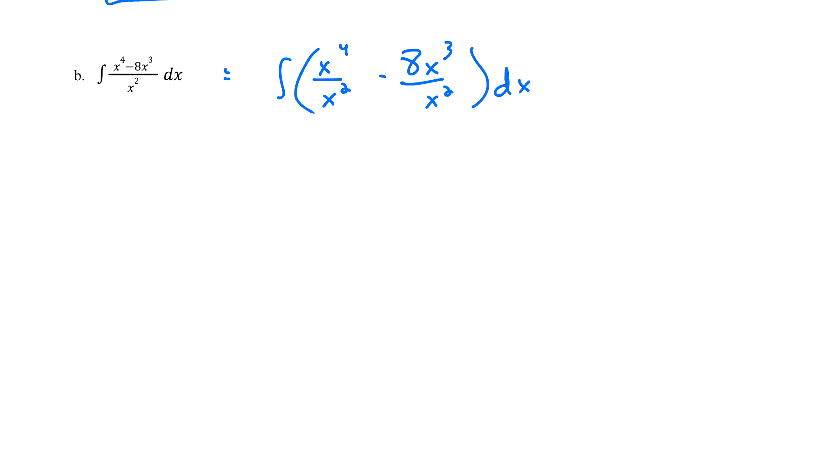I'm still integrating. I haven't done my power rule, so that means I still have my integral, I still have my differential dx. And then at this point, let's go ahead and simplify this. We can cancel some powers of x here. Again, I'm not integrating, so my integral symbol is going to come down to the next step. I should have x² for my first term minus 8x for my second term dx.